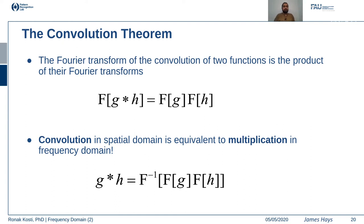The convolution theorem states that the Fourier transform of the convolution of two functions is the product of their individual Fourier transforms. This is a very important property: convolution in one domain is equivalent to multiplication in another domain. In our case, the two domains are the spatial domain (for images) and the frequency domain. Multiplication is a less expensive operation than convolution, so we can jump to the frequency domain, do the analysis, and jump back to the spatial domain.